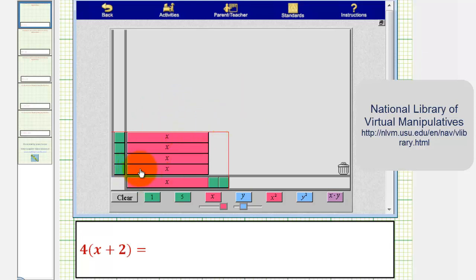Notice how the area of each of these x tiles is x square units, because this side is a length of one unit, and this side is a length of x units. And we can fit eight one tiles here on the right. Notice how the area of the rectangle formed would be four x plus eight, which is our product.